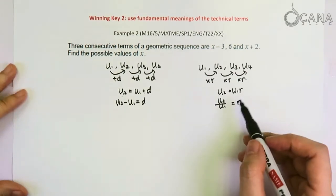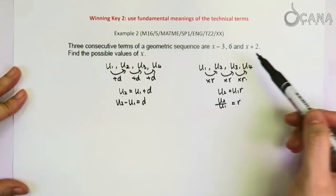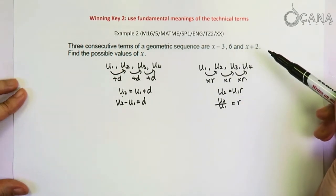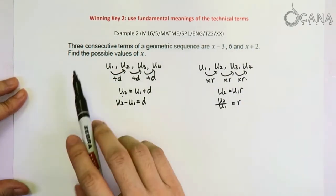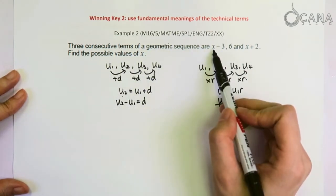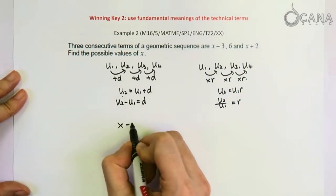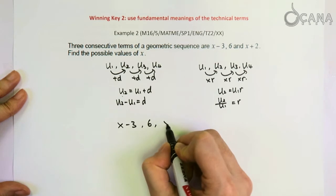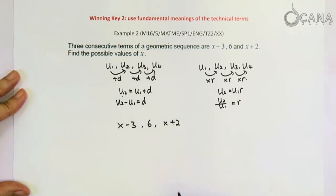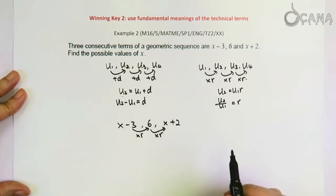And this is the point that we are going to apply in this question, which is also a past paper question from the IB exam. In this question, three consecutive terms in a geometric sequence are x minus 3, 6, and x plus 2. That means we have these three terms here. They are obtained by multiplying the previous term with a common ratio.